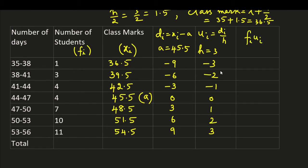Now here let us find the product fi ui. 1 into minus 3 is minus 3, 3 into minus 2 is minus 6, 4 into minus 1 is minus 4, 4 into 0 is 0, 7 into 1 is 7, 10 into 2 is 20, 11 into 3 is 33.